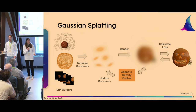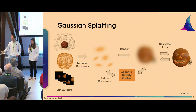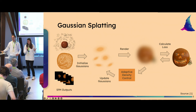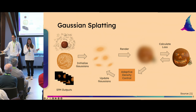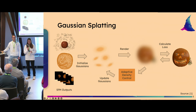There is one additional important part of the pipeline: adaptive density control. It solves the problem of having only a few thousand input points from Structure from Motion but needing a few million Gaussians to create a realistic-looking image — basically adding more Gaussians where we need more detail and removing them where we don't.